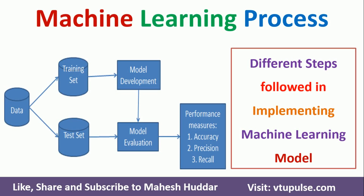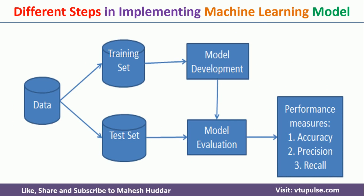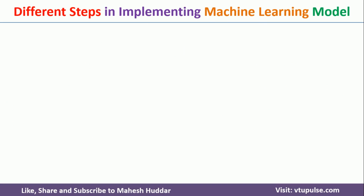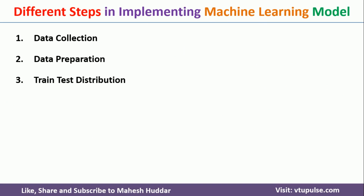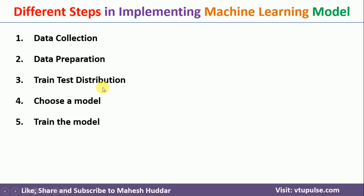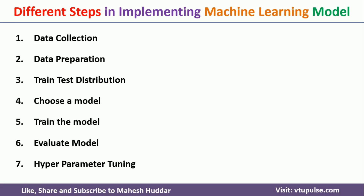Welcome back. In this video I will discuss the different steps followed in designing and implementing a machine learning model. This is the overall picture of the machine learning process. The first step is data collection, next data preparation, third is train and test distribution, followed by choosing a model, training the model, and finally evaluating the model and hyperparameter tuning. We will discuss each of these steps one by one.